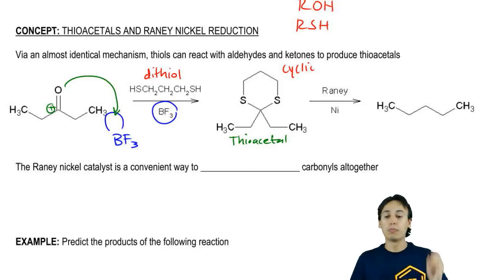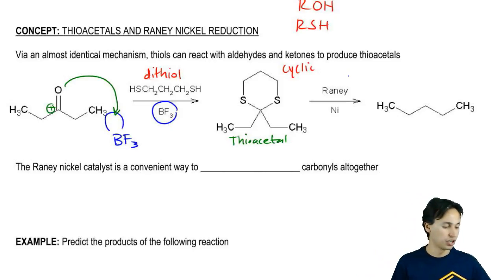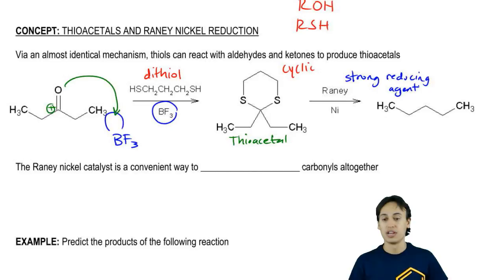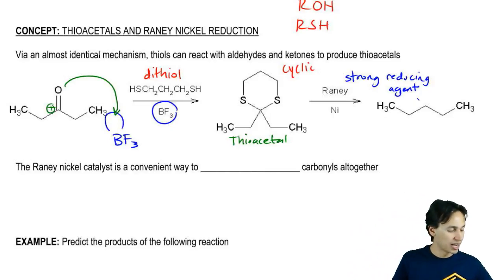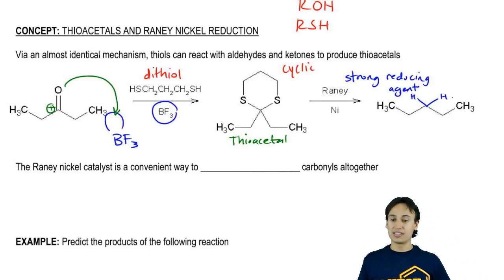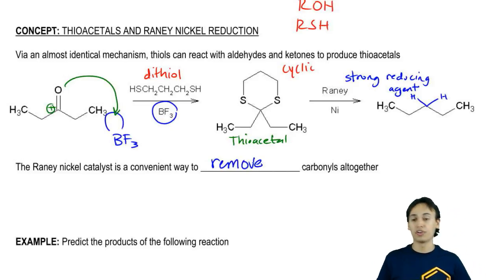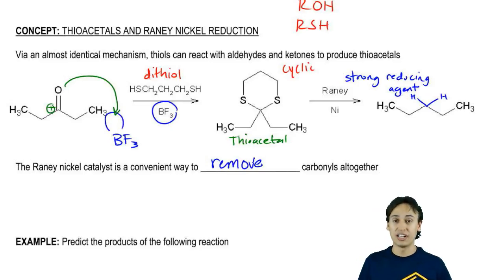That secondary reaction is when you combine a thioacetal with Raney nickel. Raney nickel is a strong reducing agent that works specifically with thioacetals. What it does is it replaces the entire sulfur ring, or the dithioester ring, with H's. The Raney nickel catalyst is a great way to remove carbonyls altogether. If your intention from the beginning was just to get rid of that carbonyl and make it into an alkane, then thioacetal with Raney nickel is the way to go.